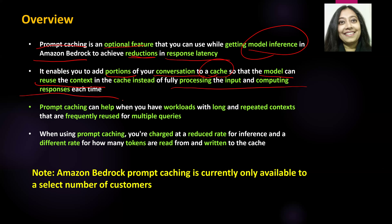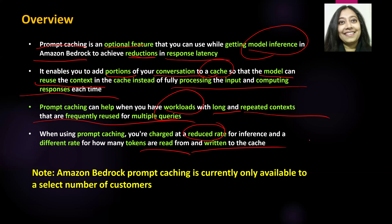Prompt caching enables you to add portions of your conversation to a cache so that the model can reuse the context in the cache instead of fully processing the input and computing the response each time. There are clear similarities between prompt caching and regular application data caching. Prompt caching can help when you have workloads with long and repeated contexts that are frequently used for multiple queries. When using prompt caching, you are charged at a reduced rate for the inference generated by the model, and a different rate for how many tokens are read and written to the cache.